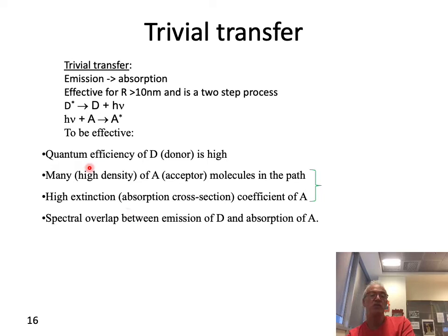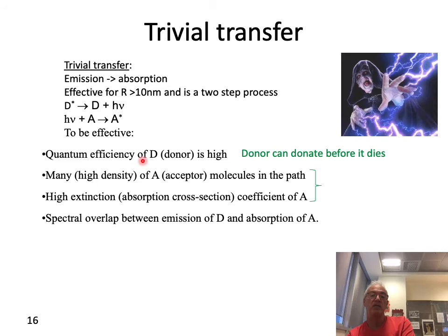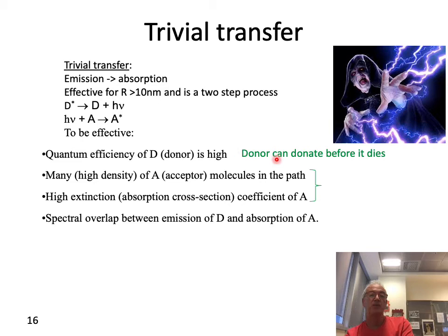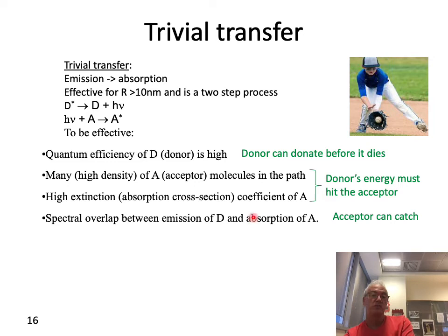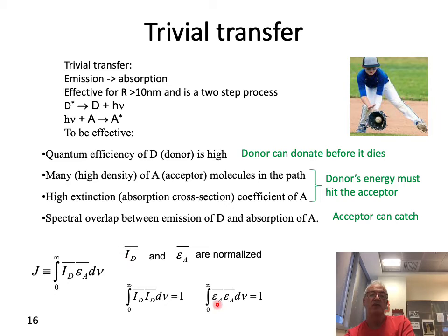For this trivial emission-absorption mechanism, several things must be fulfilled. First, the donor should be able to emit light before it decays, so the quantum efficiency should be high. Second, there should be a large number of acceptor molecules and sufficient cross-section for the photon to hit one. Lastly, the acceptor molecule must be able to absorb the light, which requires spectral overlap — written as an overlap between the emission spectrum and the absorption spectrum, both normalized.